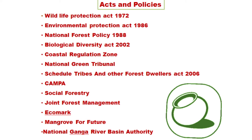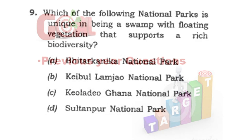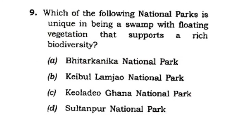We took a review of both the Main and Prelim syllabus. After this vast discussion, let us look at previous year questions. First question: Which of the following national parks is unique in being a swamp with floating vegetation that supports rich biodiversity? Option 1: Bhitarkanika National Park. Option 2: Keibul Lamjao National Park. Option 3: Keoladeo Ghana National Park. Option 4: Sultanpur National Park. The correct answer is Option 2 — Keibul Lamjao National Park.